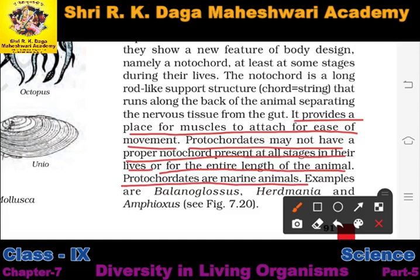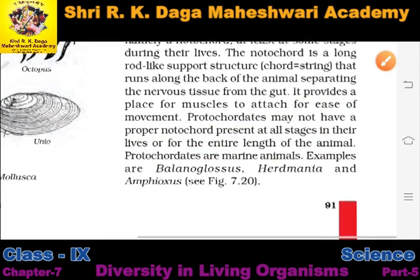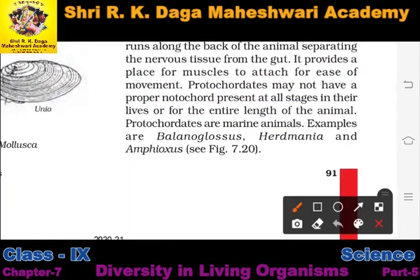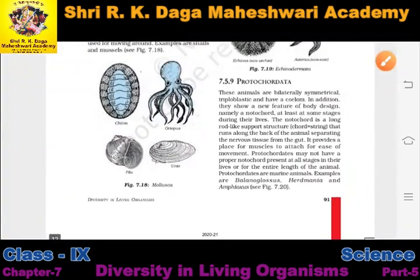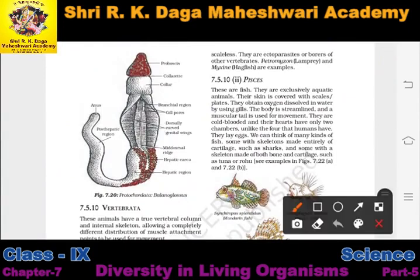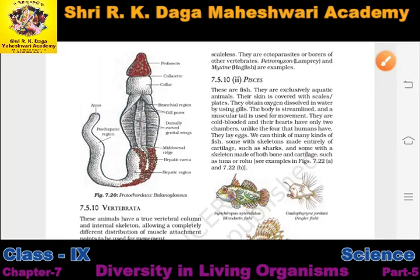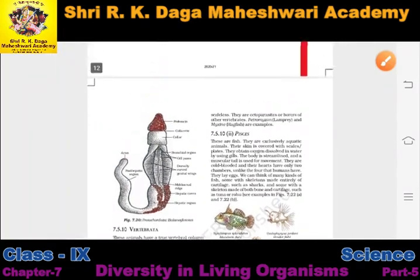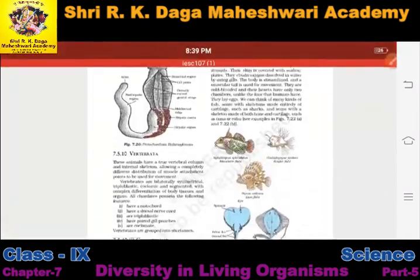Protochordates are marine animals. Examples include Balanoglossus, Herdmania, and Amphioxus. This was the ninth category of the classification.